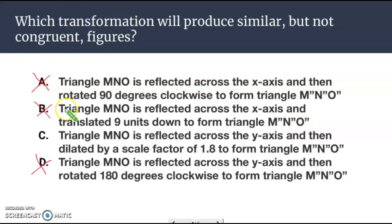The one that works is C. Triangle MNO reflected across the y-axis and then dilated by a scale factor of 1.8 to form triangle M'N'O". So the dilation here tells us this was, in fact, a production of a similar image.